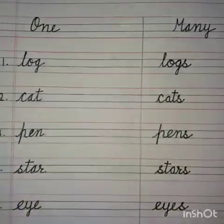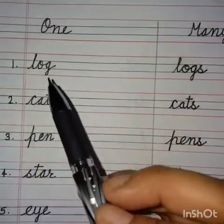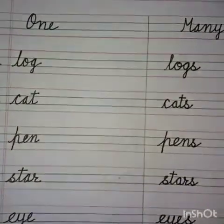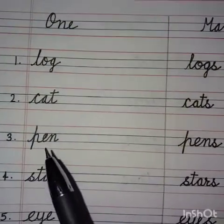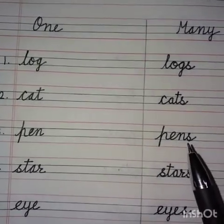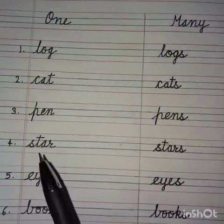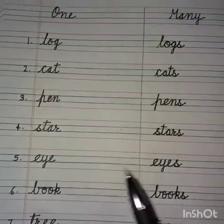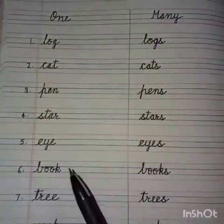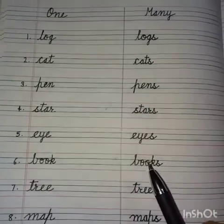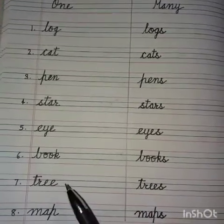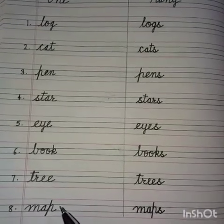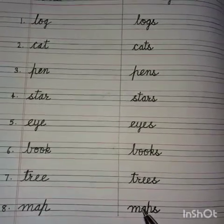Now repeat after me. One log, many logs. One cat, many cats. One pen, many pens. One star, many stars. One eye, many eyes. One book, many books. One tree, many trees. One map, many maps.